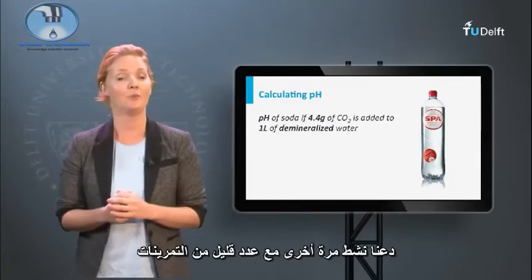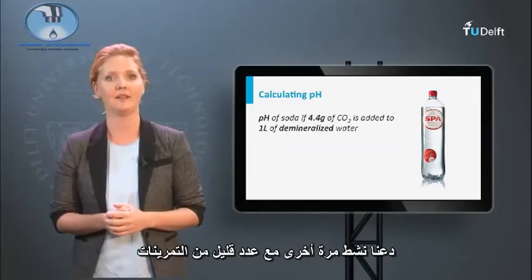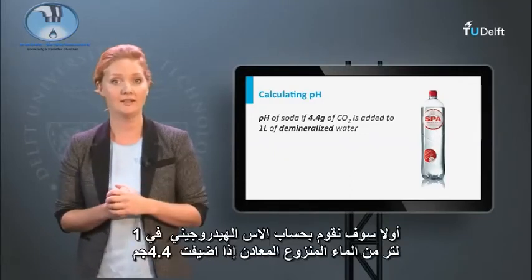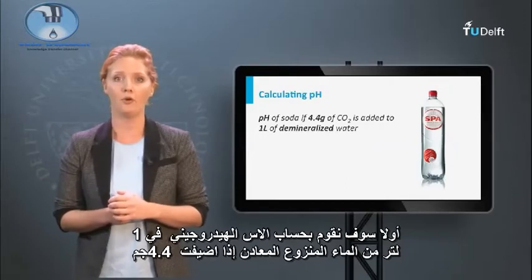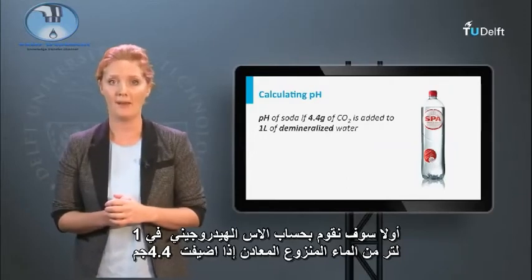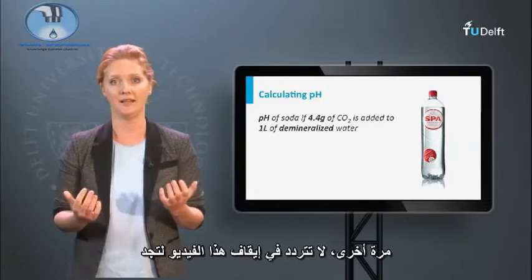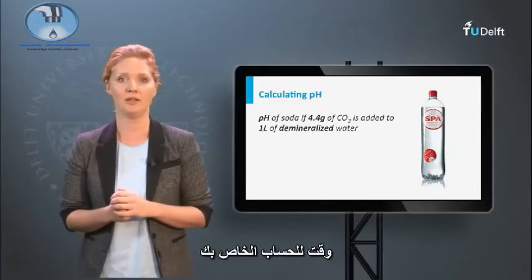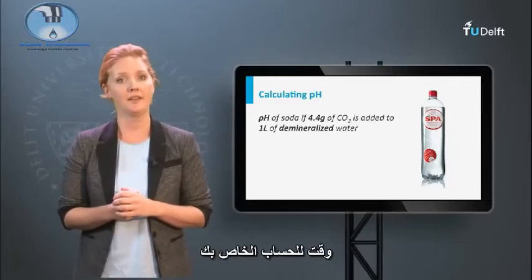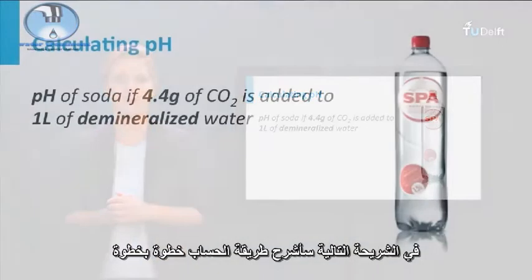Let's get active again with a few exercises. First, we will calculate the pH in 1 liter of demineralized water if 4.4 grams of carbon dioxide is added. Again, feel free to pause this video to take your time for calculation. In the next slide, I will explain the calculation step by step.